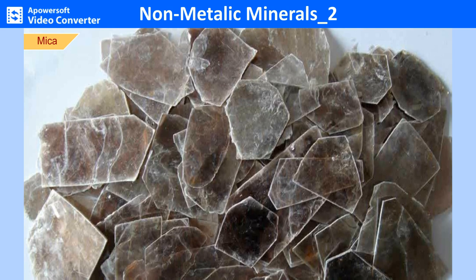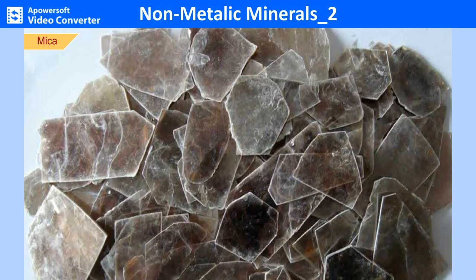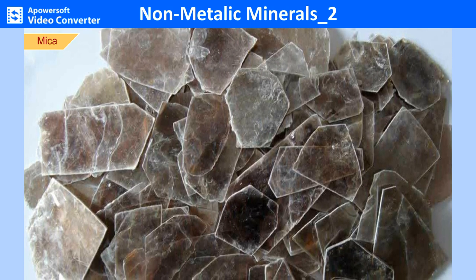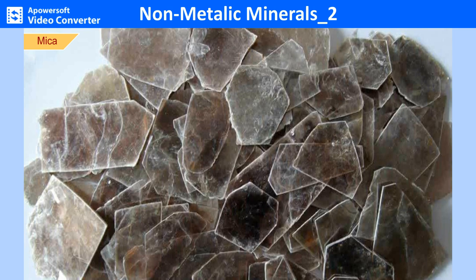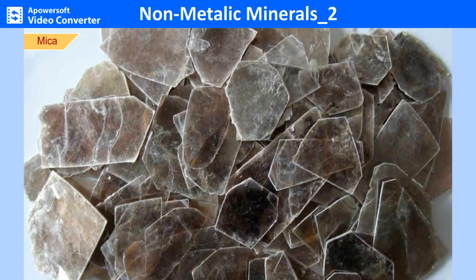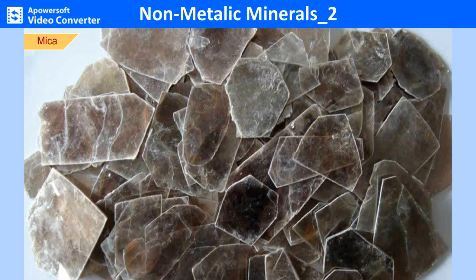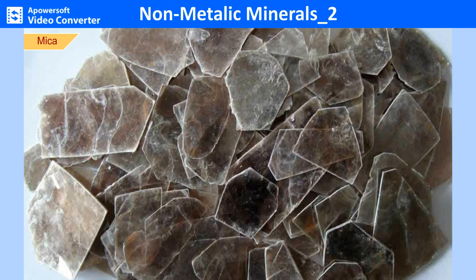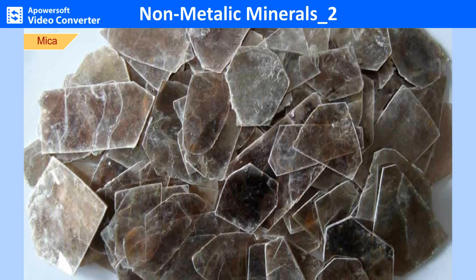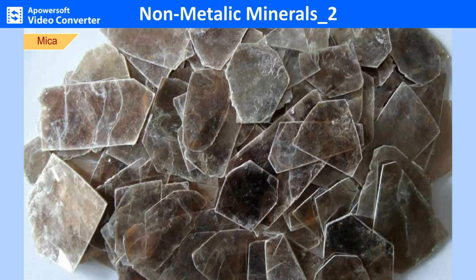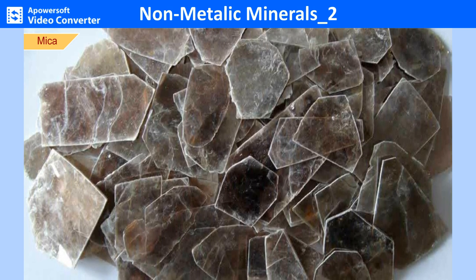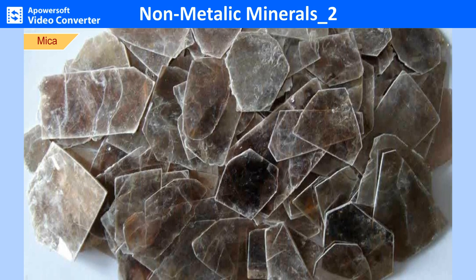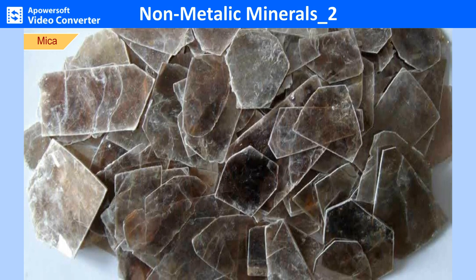Muscovite (light color) and biotite (black) are the most abundant varieties of mica. The two striking features of mica are its thin sheet structure and luster. Muscovite mica is usually found in metamorphic rocks, while biotite mica is found in both igneous and metamorphic rocks. Mica is widely used in heating instruments, electric condensers and optical instruments because of its flexibility, elasticity, and low thermal and electrical conductivity.